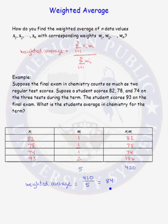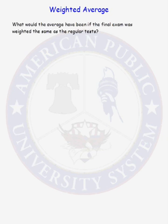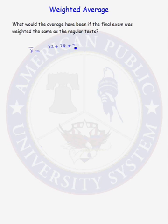The student's average in chemistry for the term is 84, calculated through a weighted average. What would the average have been if the final exam was weighted the same as the regular tests? In that case, we just compute a regular sample mean: 82 plus 78 plus 74 plus 93 divided by 4, and the average would have been 81.75.